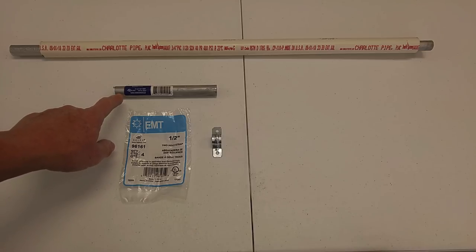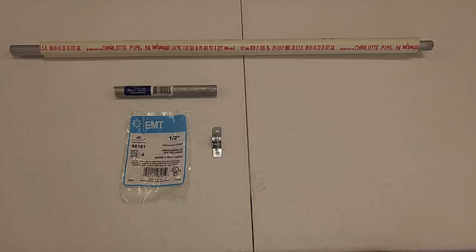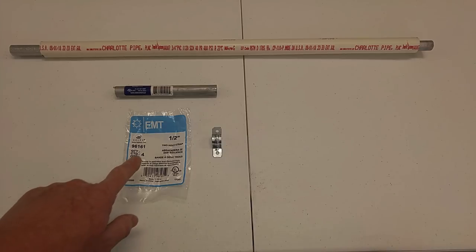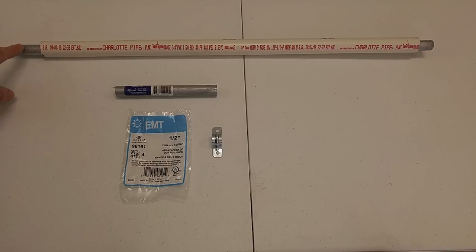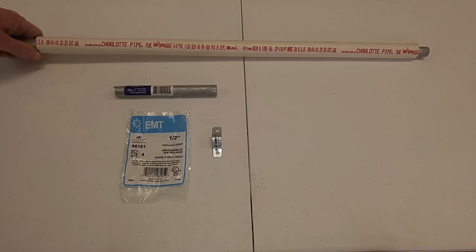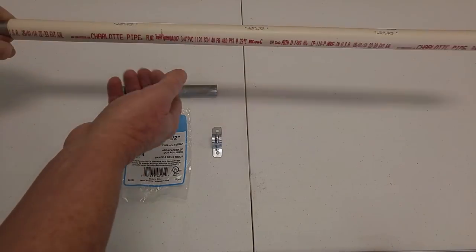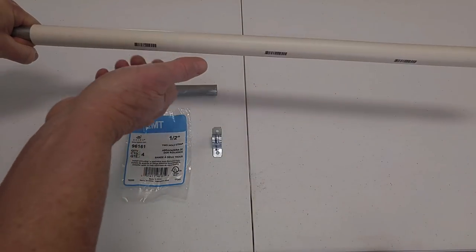Here I have some half inch in diameter EMT conduit and then I also have some three quarter inch schedule 40 PVC pipe and a one half inch two hole strap for the EMT tubing. What I'm going to do is slide the half inch EMT tubing into the three quarter inch PVC pipe and what that does is it fits well enough that it spins and that's what's going to make your roller.